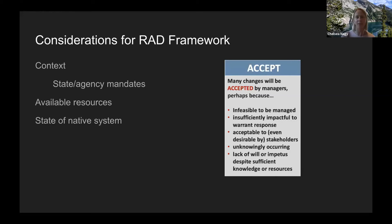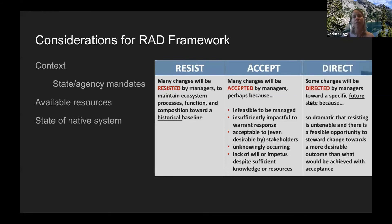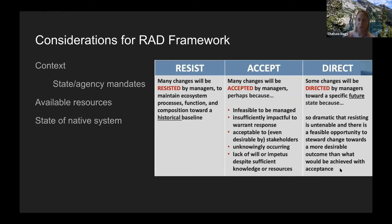If you're willing and able to act and are managing for the historical or baseline condition — like maintaining sagebrush — you're in the 'resist' category. If you can do something but are open to a new condition, you're in the 'direct' category: some changes will be directed toward a specific state because resisting is untenable. For example, if cheatgrass has excluded all sagebrush, you might still be able to steer the cheatgrass-dominated system toward something more desirable.